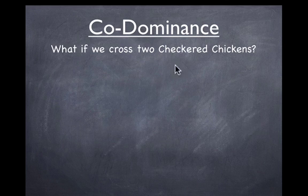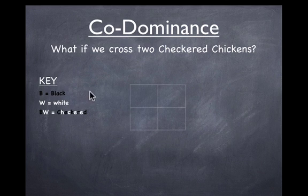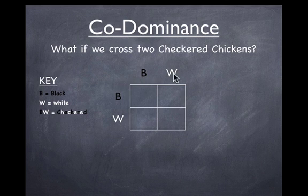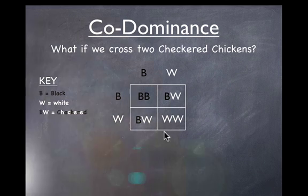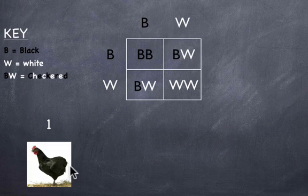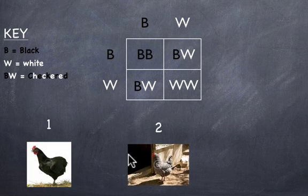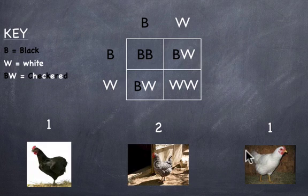So what happens if we cross two of Mr. Philippeck's favorite animals — checkered chickens? Let's see what happens here. Here's our key and here's our Punnett square. The genotype is big B, big W. When we cross two checkered chickens, you see that all of a sudden we don't just get checkered chickens — we also get a black feathered chicken and a white feathered chicken. Much like with incomplete dominance, with codominance both the genotypic and phenotypic ratios are going to be the same. We get one black feathered chicken, two checkered chickens, and one white feathered chicken.